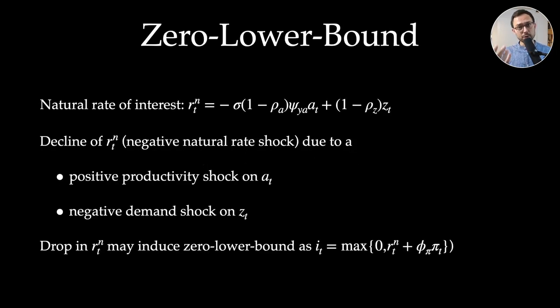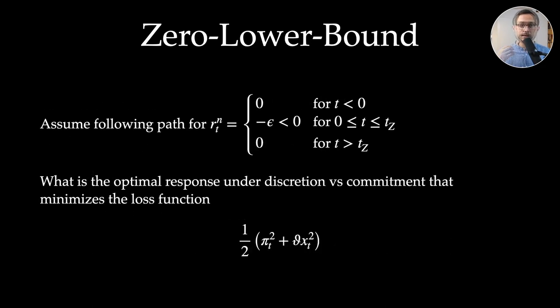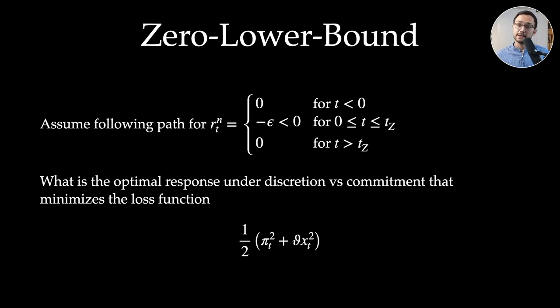Now let's incorporate the zero lower bound on nominal interest rates into this model. We need to think about how we get there. Here I want to consider adverse demand shocks on the natural interest rate. Note that the natural interest rate can decline either due to a positive productivity shock or a negative demand shock in this model. Let's study the case when this drop is so large that it induces the zero lower bound. Up to period zero the central bank can conduct optimal policy achieving price stability and an output gap of zero. Then at period zero a large shock or series of shocks drives the economy to the zero lower bound. At some period T_z we leave the zero lower bound and the central bank can again follow the optimal simple rule.